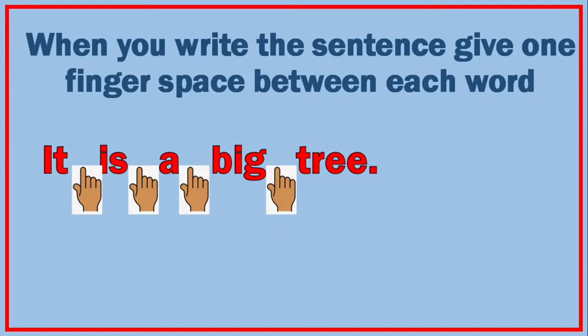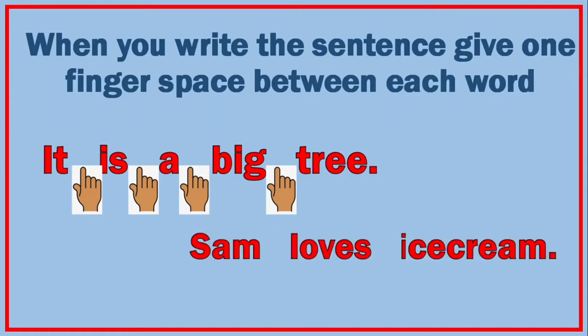Another example: Sam loves ice cream. Again I have given one finger space between each word — Sam, loves, ice, cream. Now it makes sense.